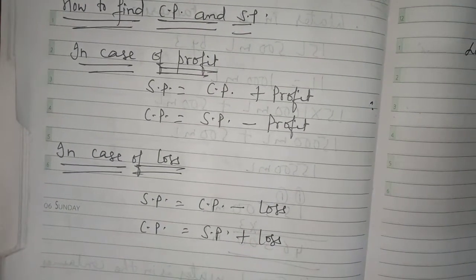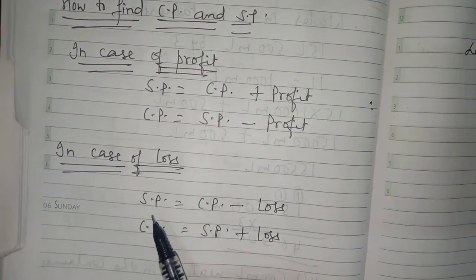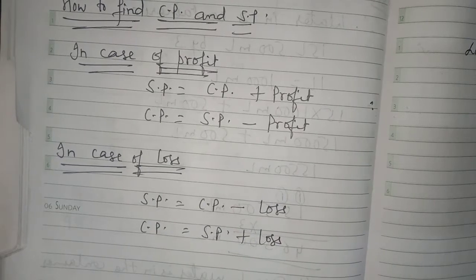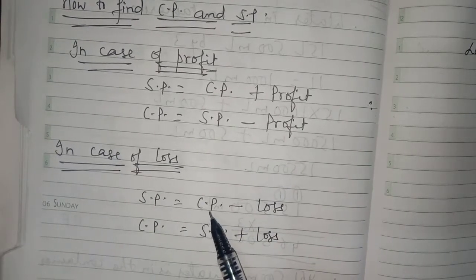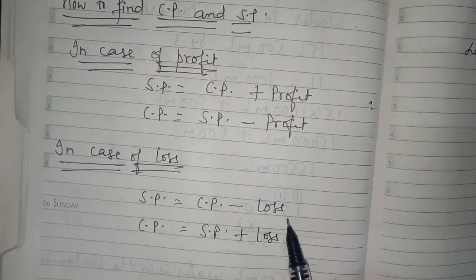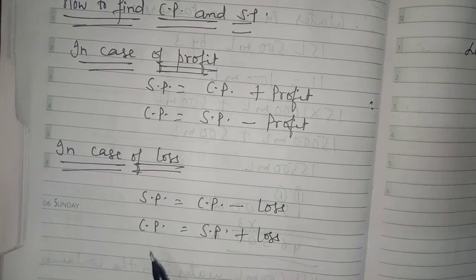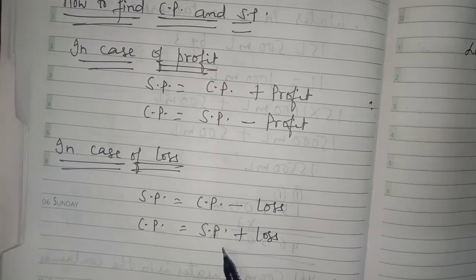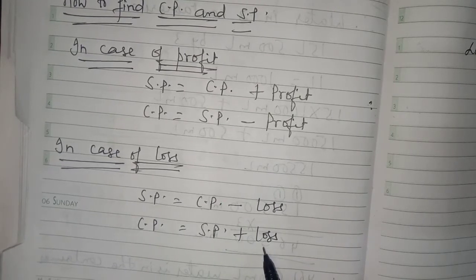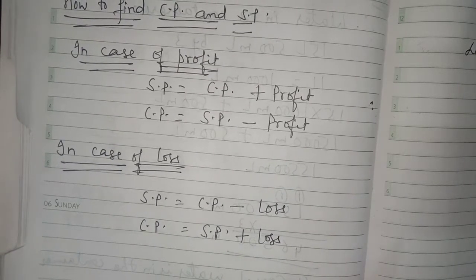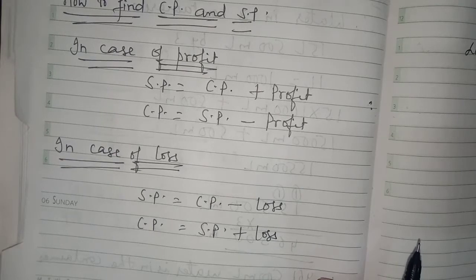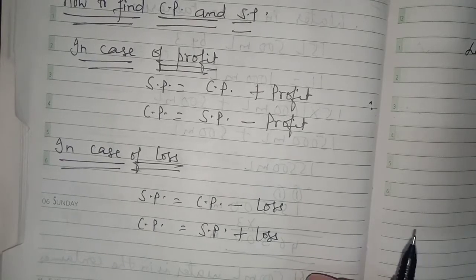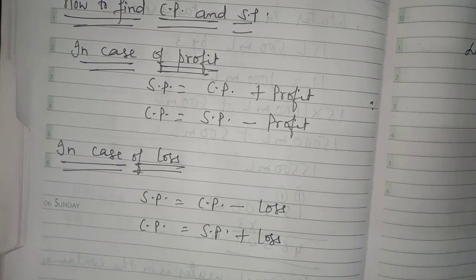In case of loss, to find SP, use SP = CP minus loss. To find CP, use CP = SP plus loss. These are the formulas to find cost price and selling price.